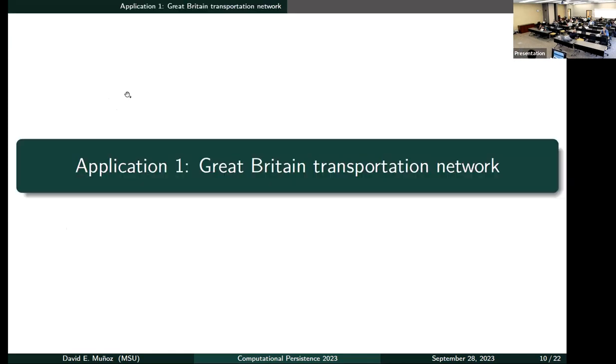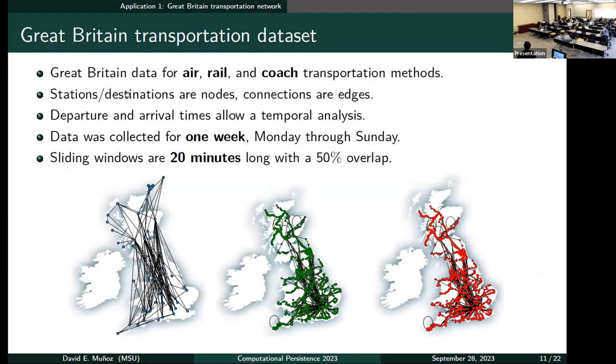The first example is the transportation network. We have this data set of three types of transportation in Great Britain: air, rail, and coach. Here are the graphs, the total accumulated graphs for these three transportation methods. Each node is a station or destination, and the edges are the trips or the connections between stations. And with the departure and arrival times, we have the sequence of times where the edges are on and off.